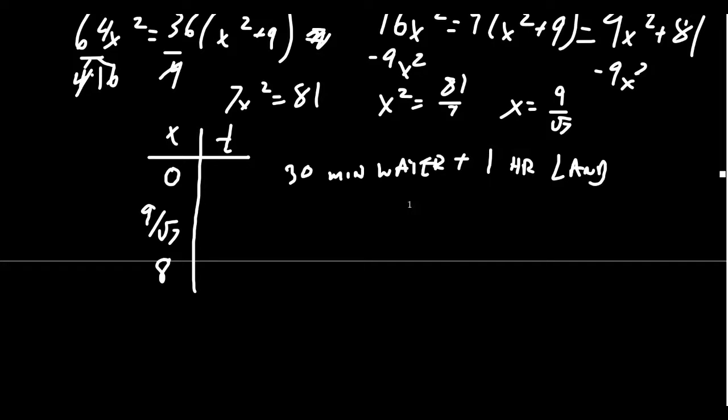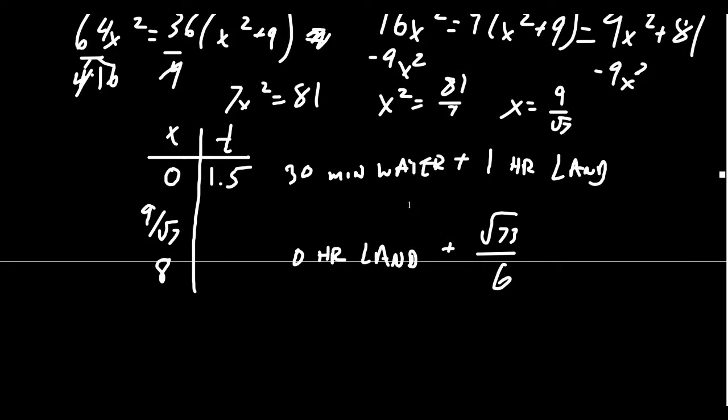If we did the other extreme where we did 8, the land part's easy, you're going to get 0 hours on land. But in terms of going across the water, if you plug in the 8, you get 8 squared plus 9, take the square root, and then divide by 6 in that situation. You're going to get the square root of 73 over 6, which is approximately 1.42 hours. So that is a little bit better. It's better for him to go entirely across the water than to go directly across, because he does shave off a few minutes there.